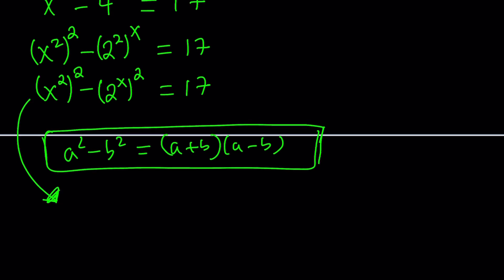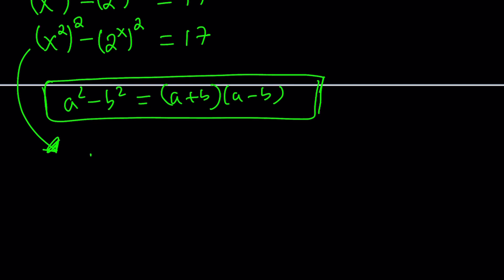Now, let's factor it accordingly. So this will become x squared plus two to the power x times x squared minus two to the power x. In this case, this is my a and this is my b. And now this is equal to 17. Now, 17 is a prime number, so it can only be factored so much. For example, 17 times 1, or 1 times 17, or negative 1 times negative 17. So there are four ways to do it, including the negatives.